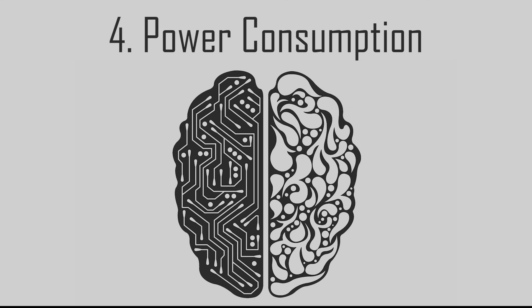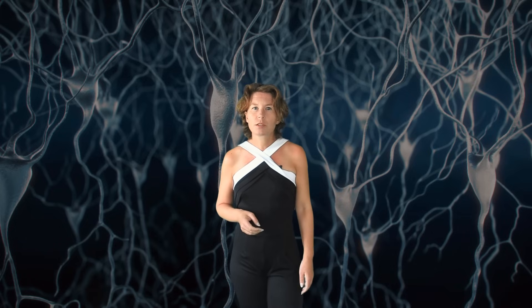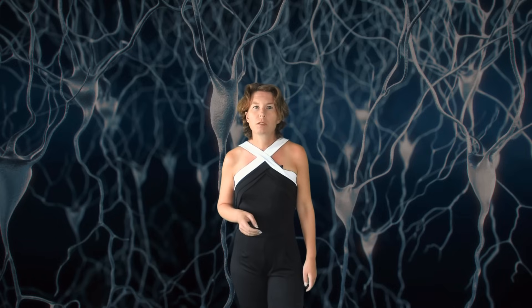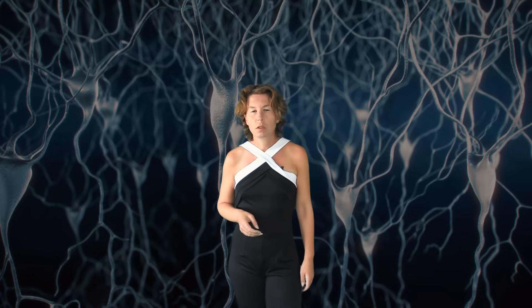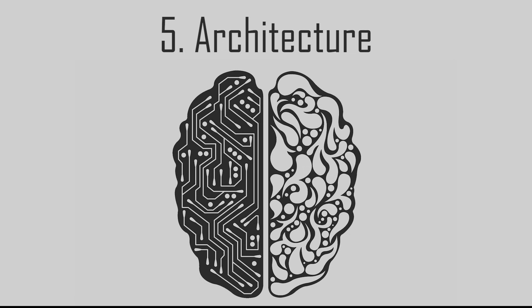Fourth, power consumption. The human brain is dramatically more energy efficient than any existing artificial intelligence. The brain uses around 20 watts, which is comparable to what a standard laptop uses today. But with that power, the human brain handles a million times more neurons. Fifth, architecture. In a neural network, the layers are neatly ordered and addressed one after the other. The human brain, on the other hand, does a lot of parallel processing and not in any particular order.